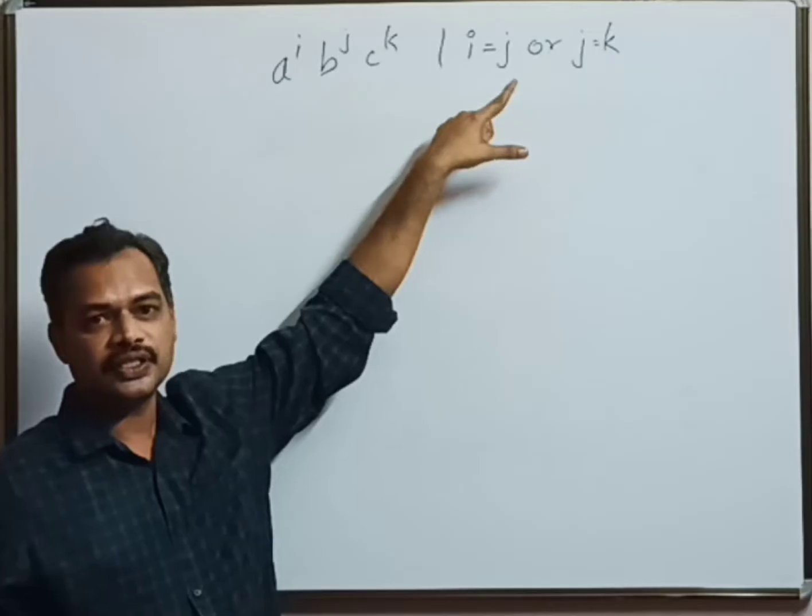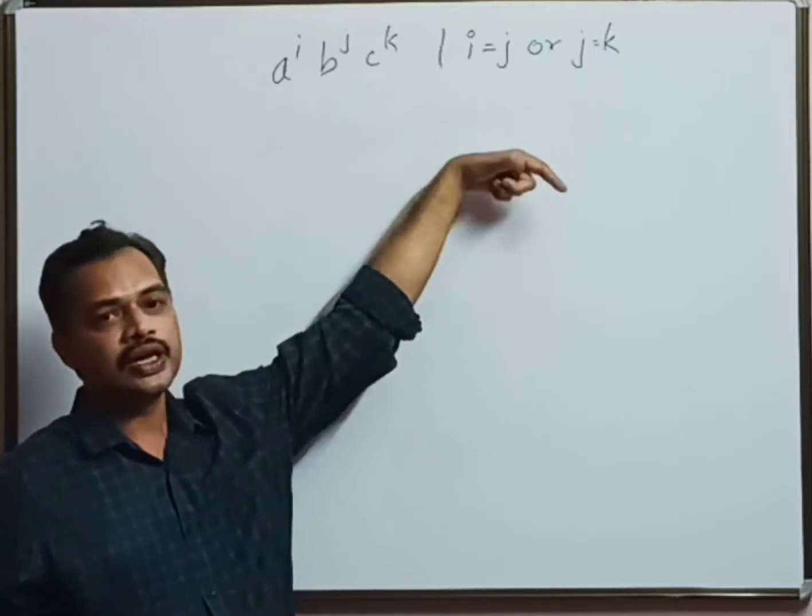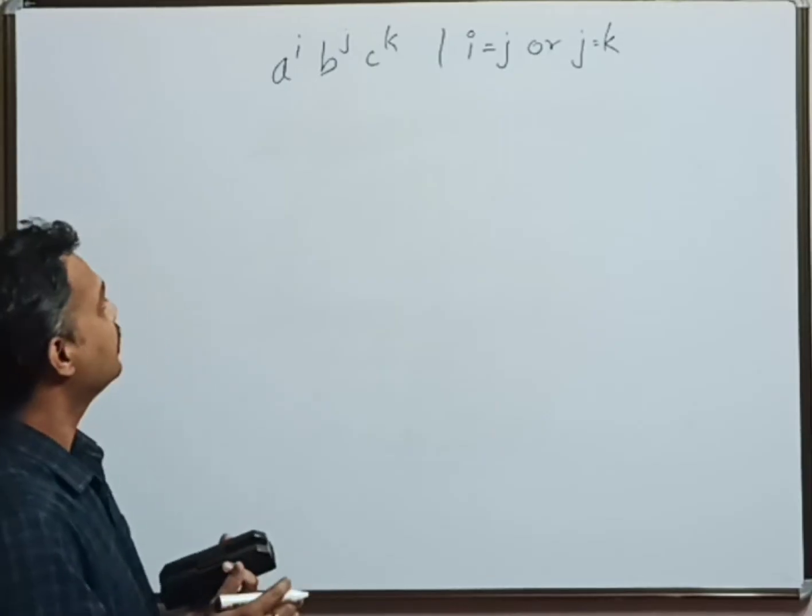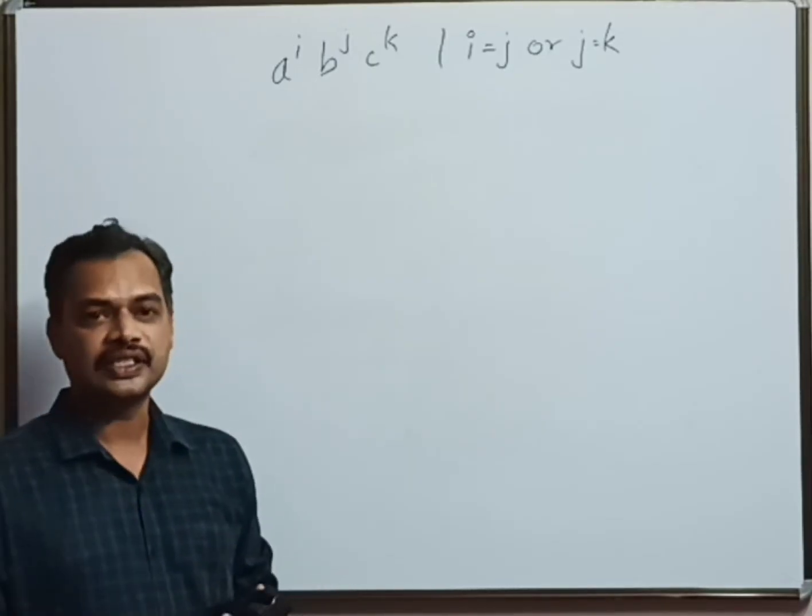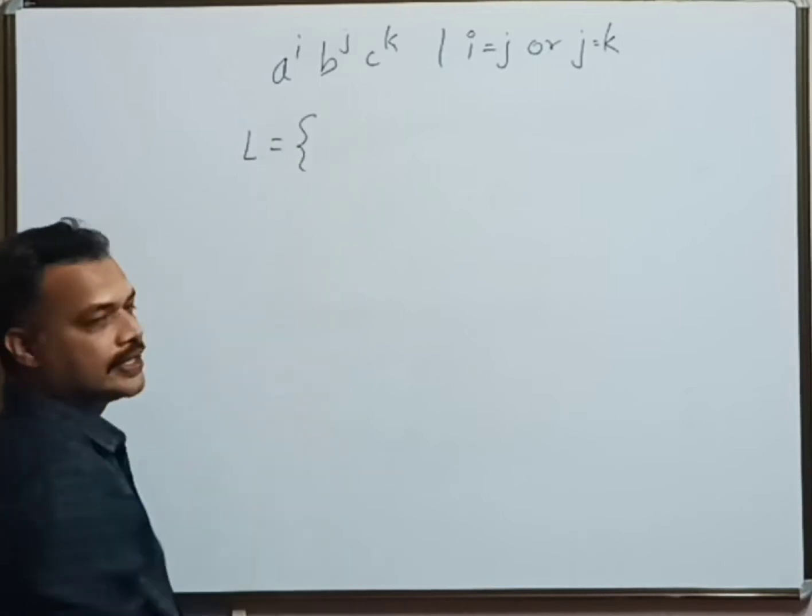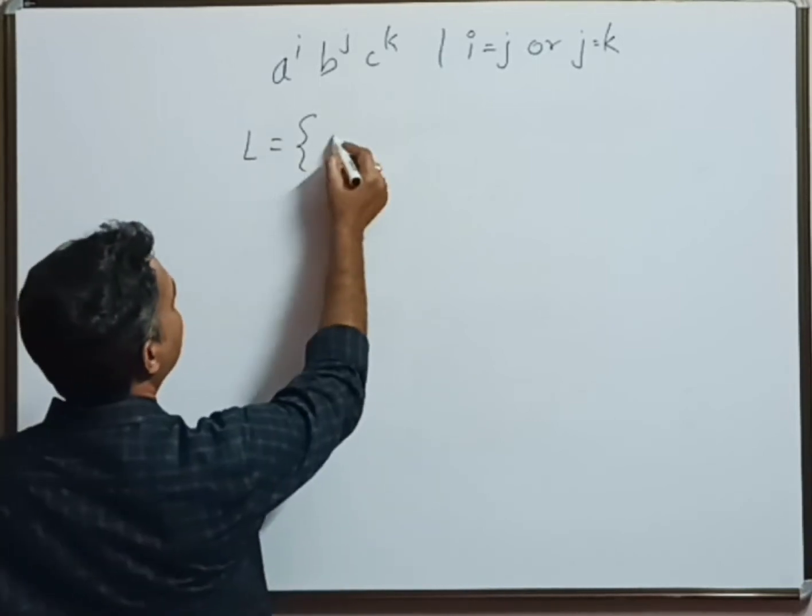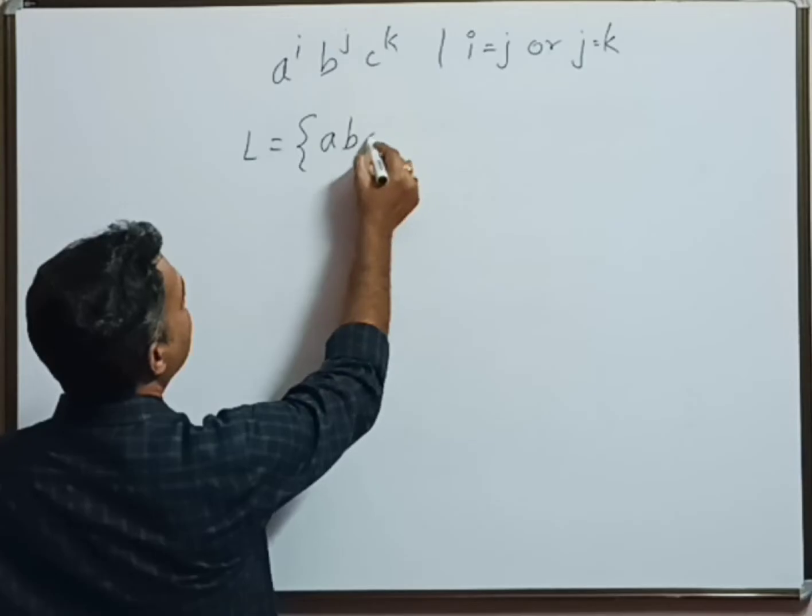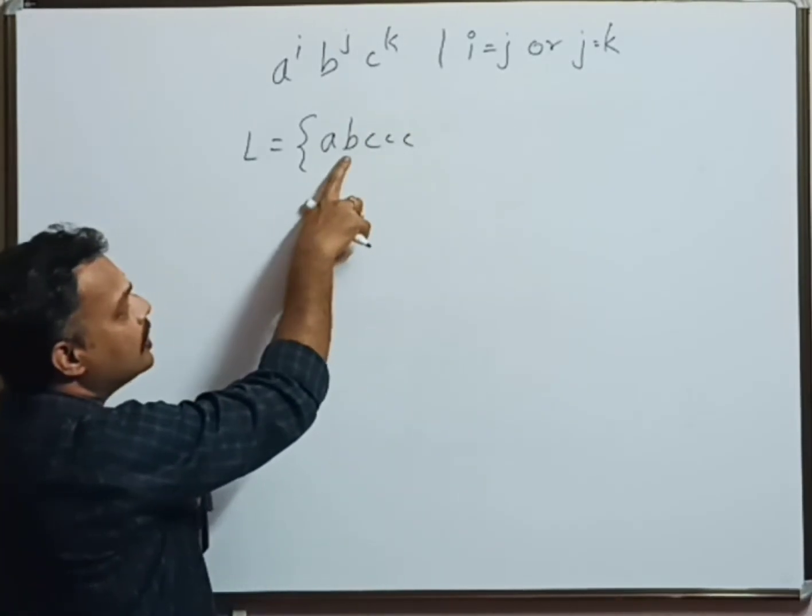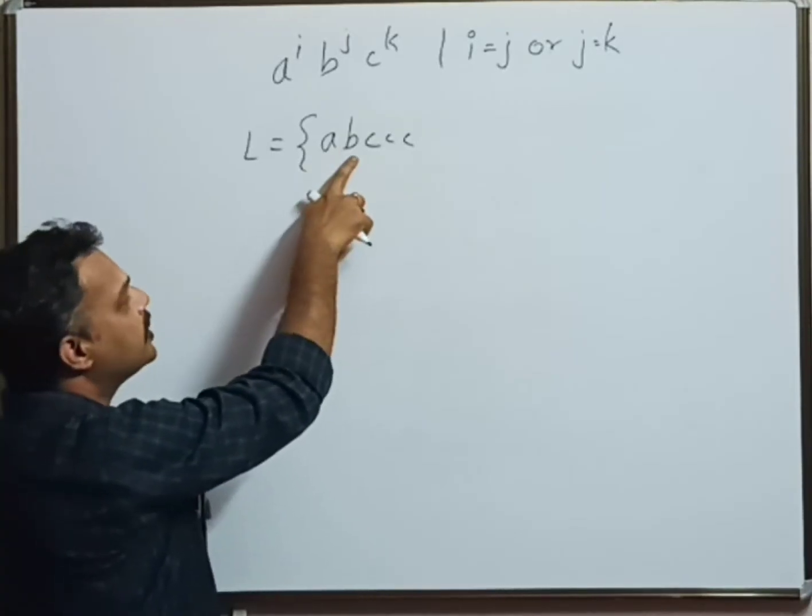We have two conditions and considering these, we're supposed to design the CFG. Let us start by identifying the language set L. L can have set of strings something like abccc, which satisfies the first condition: number of a equals one, number of b equals one, so i equals j.